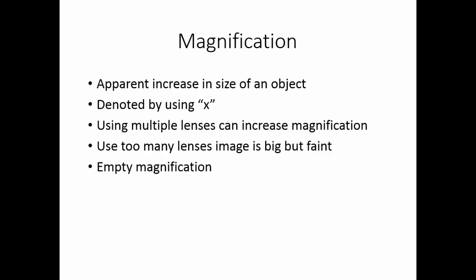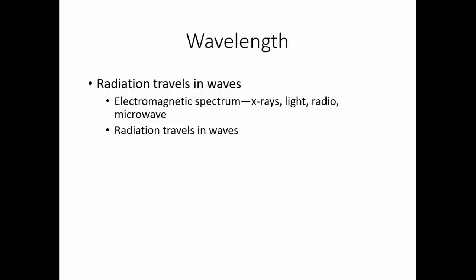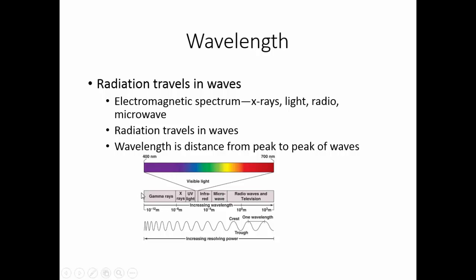We use radiation as our visualizing tool in microscopy — radiation travels in waves. We use parts of the electromagnetic spectrum, which includes x-rays, light, radio, and microwaves. The wavelength is the distance from peak to peak of the waves. Shorter wavelengths have a smaller distance between peaks; longer wavelengths have more distance. The visible light portion of the electromagnetic spectrum is actually just a very small piece of the whole spectrum, with blue-purple light being the shortest wavelength and red light the longest.